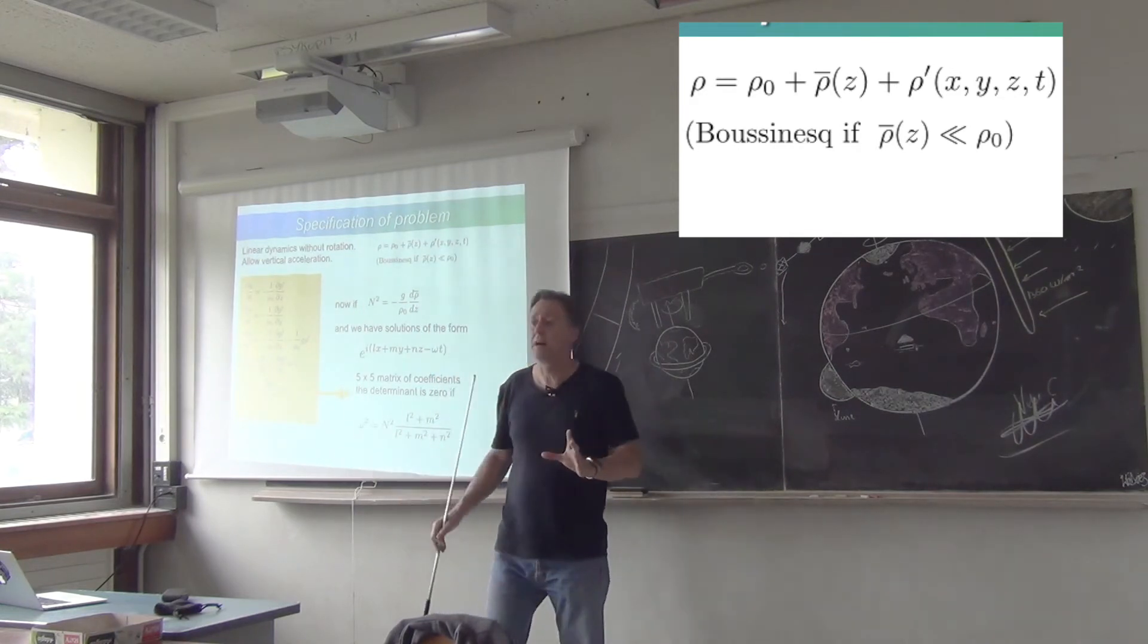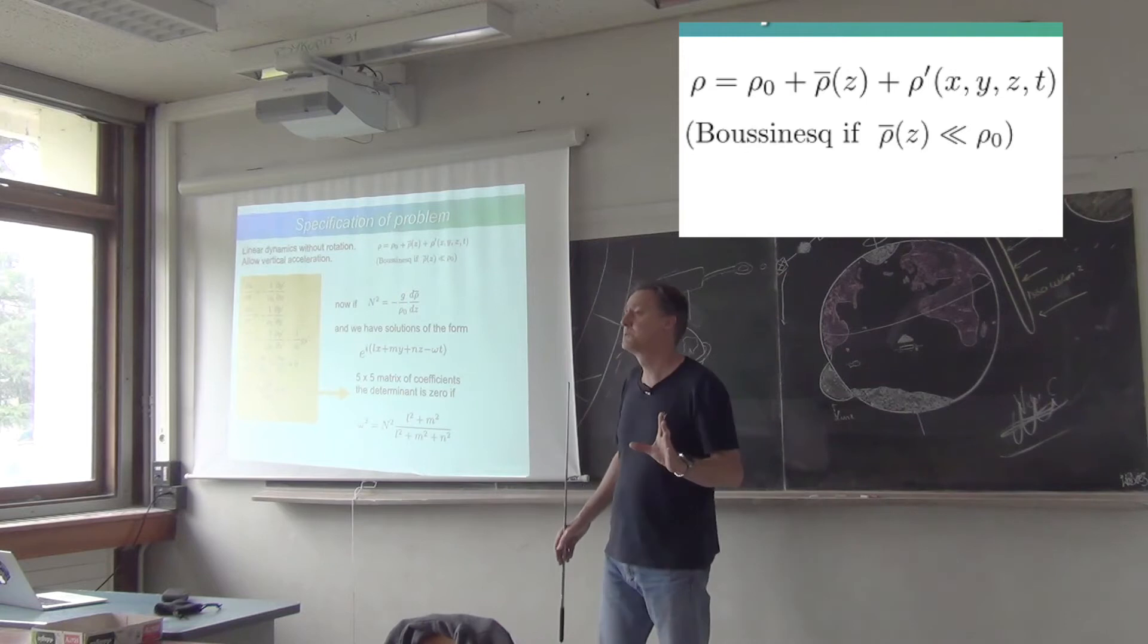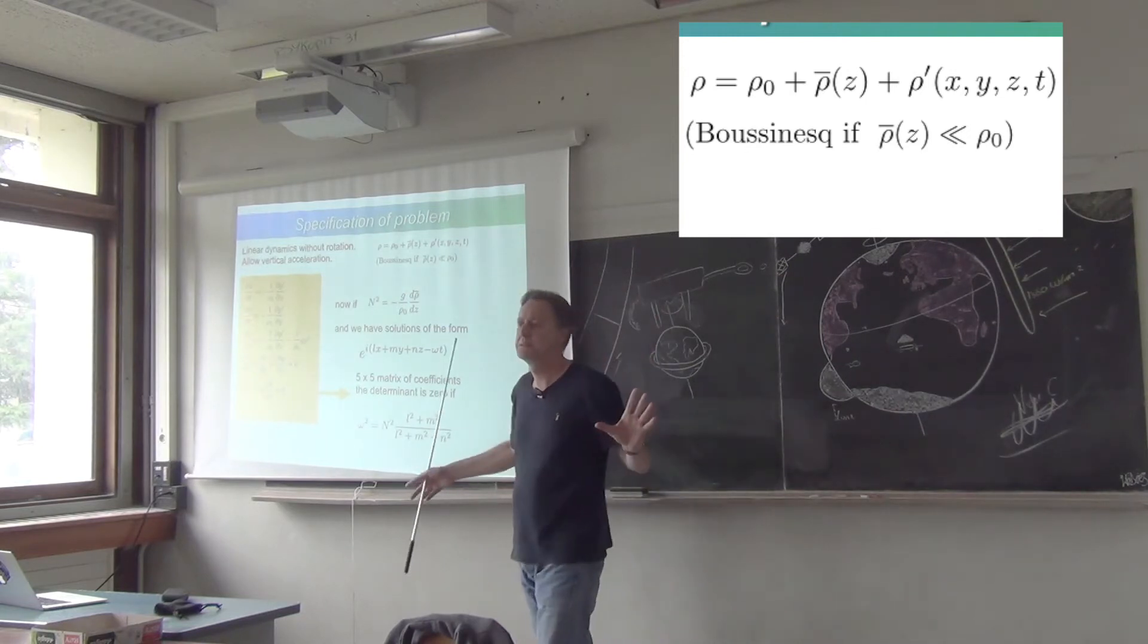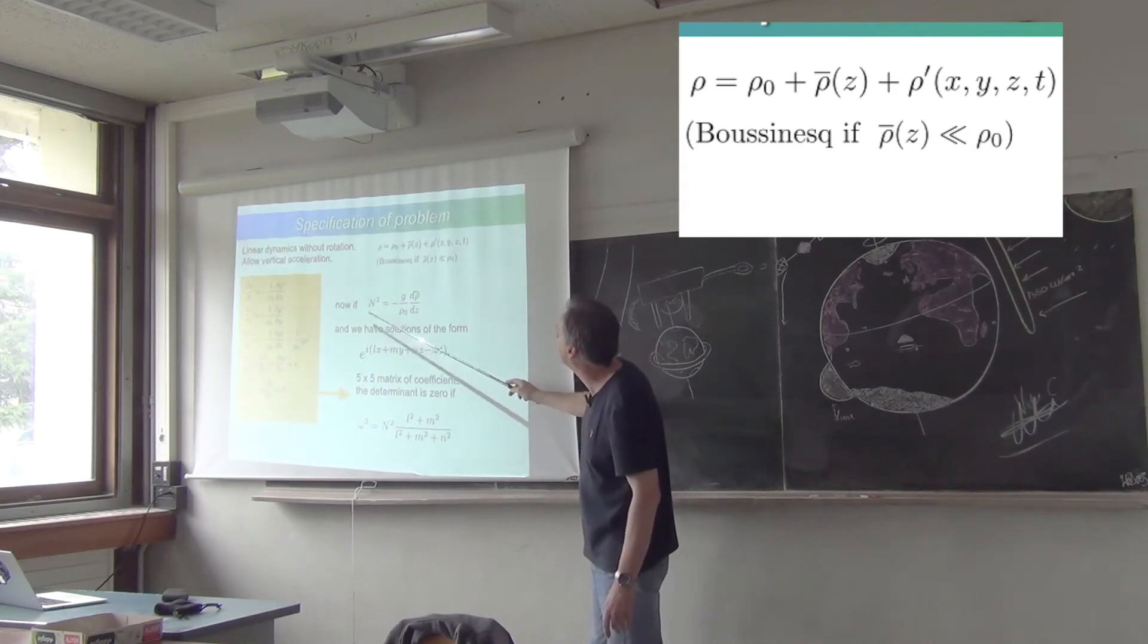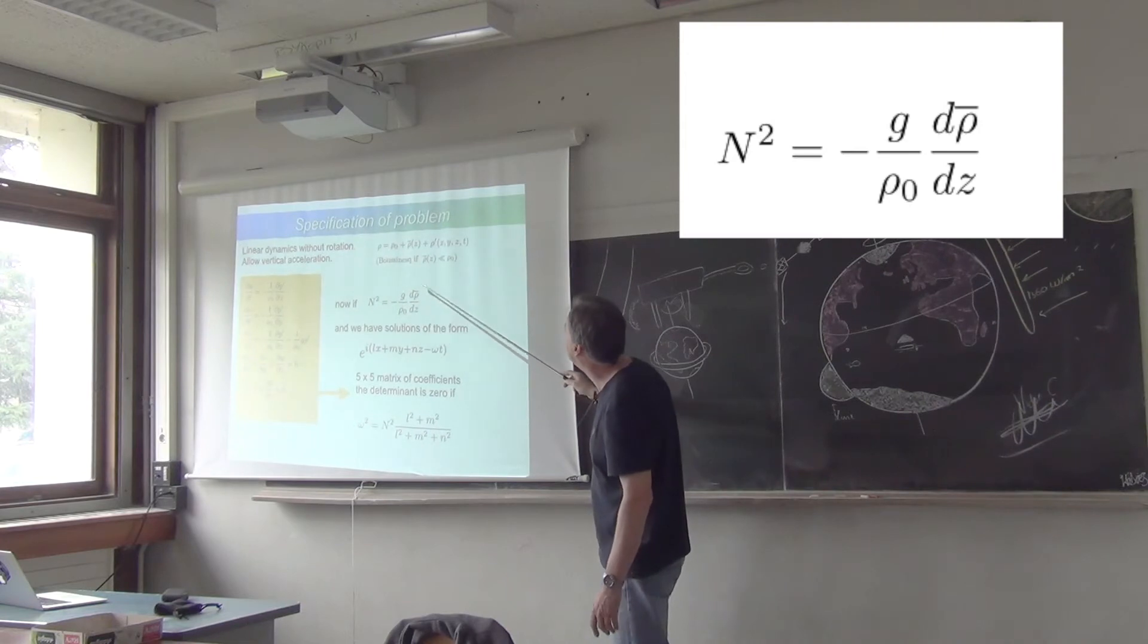In fact, it turns out that Boussinesq approximations work pretty well in the atmosphere as well for large scales. But anyway, what we're interested in here is the stratification. And so we specify that as n squared is minus g over ρ d by dz of this basic state density.